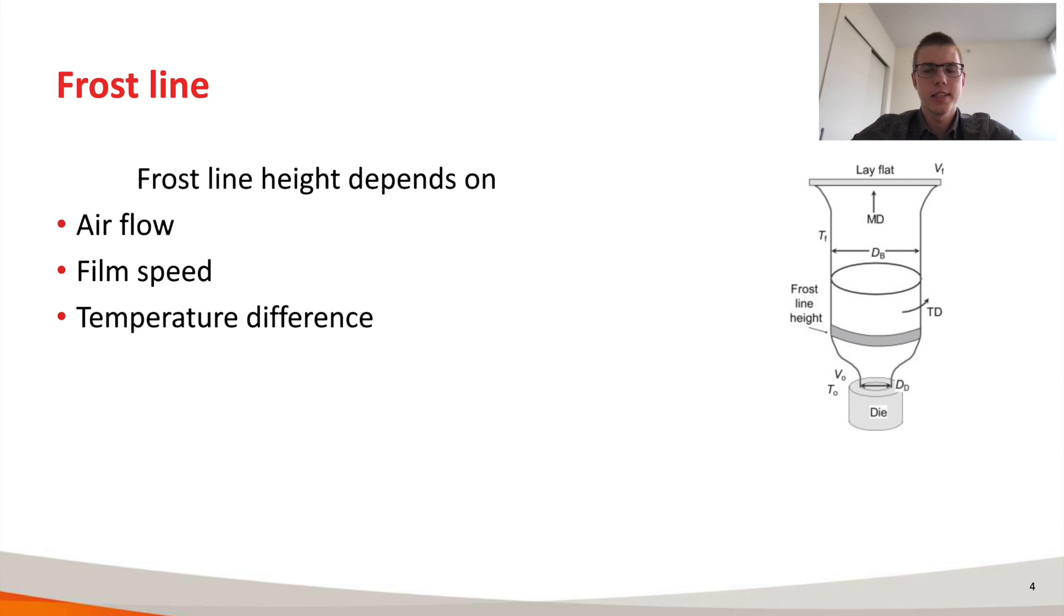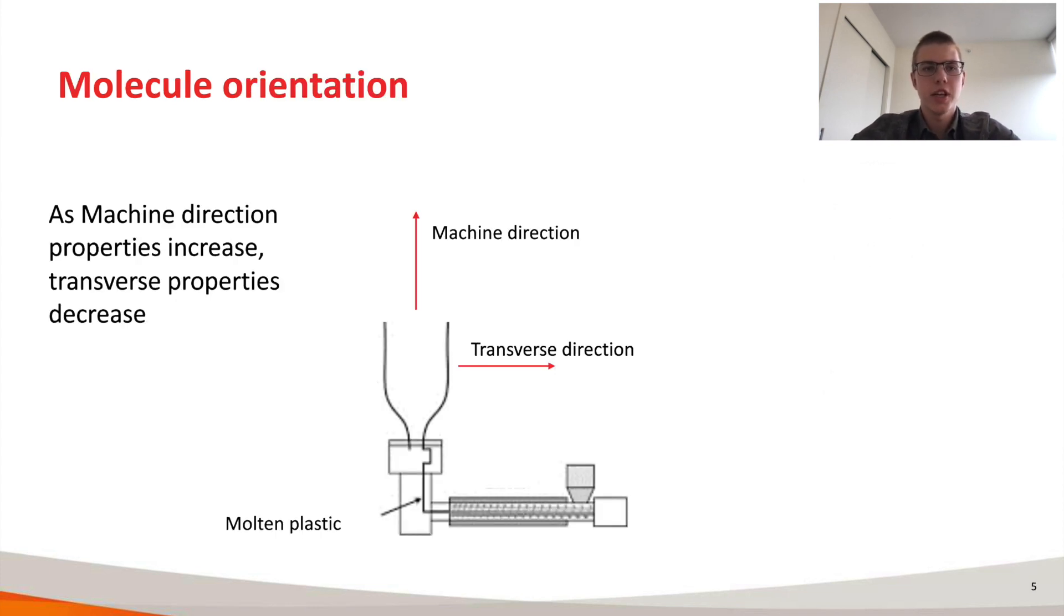Properties of the film such as tensile strength, flexural strength, toughness, and optical properties drastically change depending on the orientation of the molecules. Molecules can be aligned in the machine direction and in transverse direction. As transverse direction properties increase the longitudinal properties decrease and vice versa.